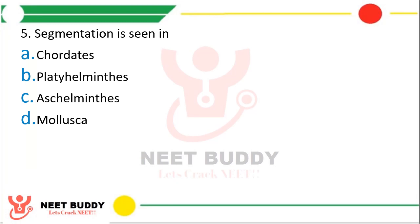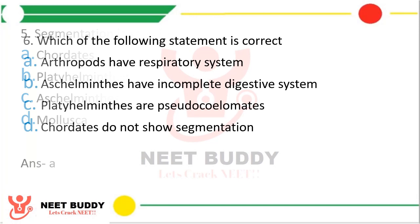Question five: segmentation is seen in — option A, chordates; option B, Platyhelminthes; option C, Aschelminthes; or option D, Mollusca? The correct answer is option A, that is chordates. Segmentation is seen in chordates.